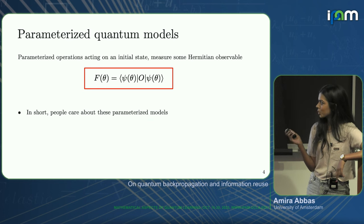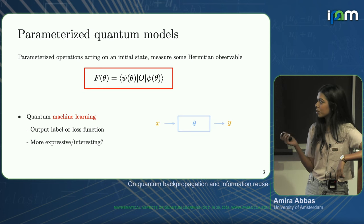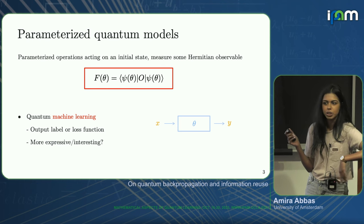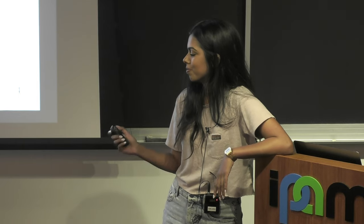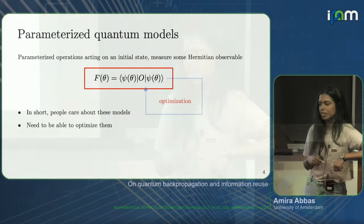I'm not advocating that these models are expressive or interesting or should be used — just saying they are used and they're quite popular. And if they are popular and people care about them, then we should be able to optimize them. At the end of the day, they parameterize functions and we need to figure out how to go back and tweak, train, and optimize these parameters in an efficient way.